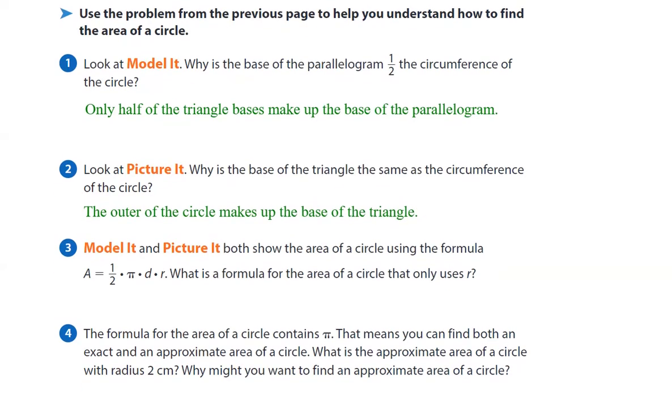Number three. Model and picture both show the area of a circle using the formula. And the formula they're using is area is half times pi times diameter times radius. What is the formula for the area of the circle that uses only r? Area is pi times radius squared. This one's better. Use this one. Stick that one in your brain and memorize it forever.